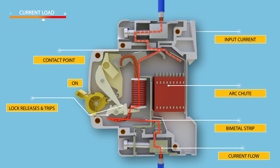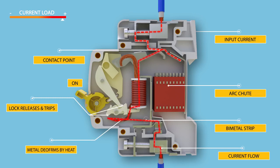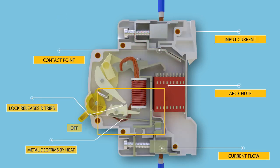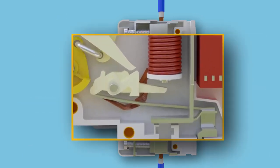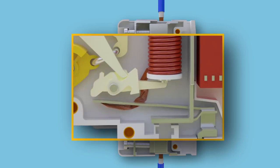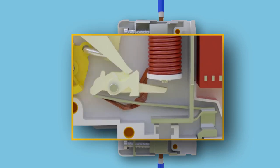In tripping operations, an arc is formed when the contacts start separating. This arc is then forced into the arc chute plates, where it is formed into a series of arcs, and at the same time energy is extracted and the arc cools. A closer look at how the tripping mechanism works is shown in the animation.